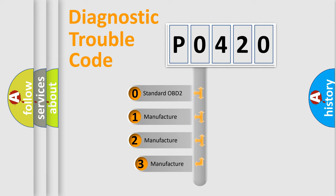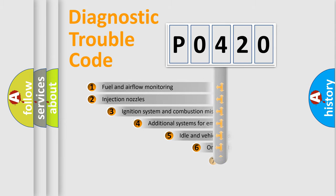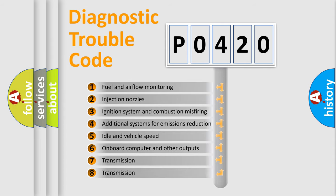If the second character is expressed as zero, it is a standardized error. In the case of numbers 1, 2, or 3, it is a more specific expression of the car-specific error.